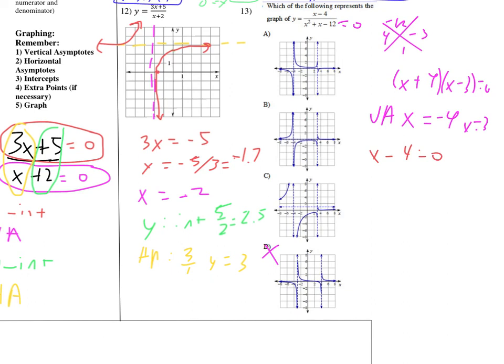For the x-intercept, set the numerator equal to 0: x-intercept at (4, 0). That didn't clearly eliminate any remaining options. For the horizontal asymptote, the denominator's degree is higher — case 1 — so horizontal asymptote at y equals 0. That eliminates option C, which appeared to have a horizontal asymptote at y equals 1. Two options remain.